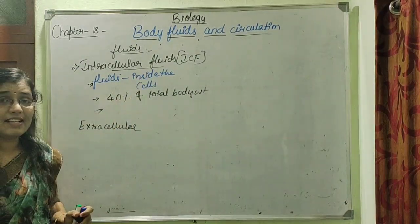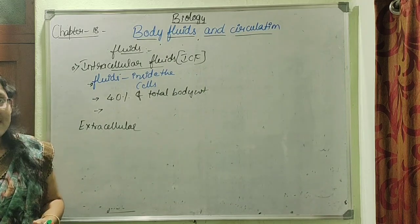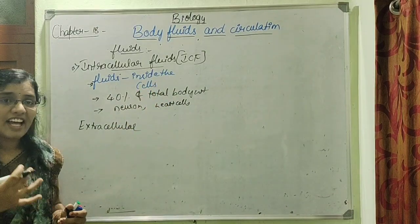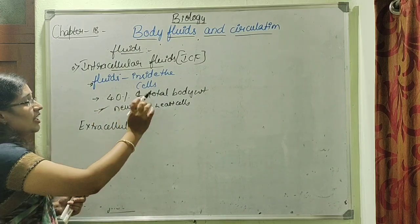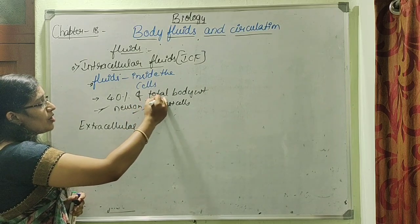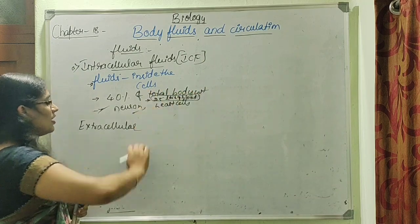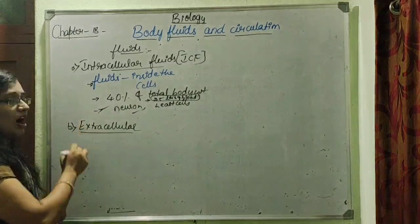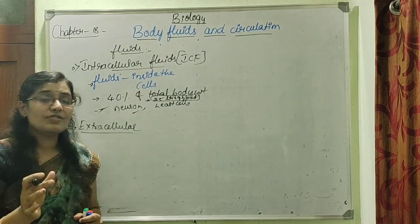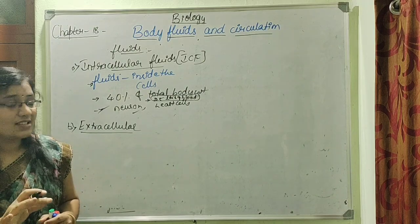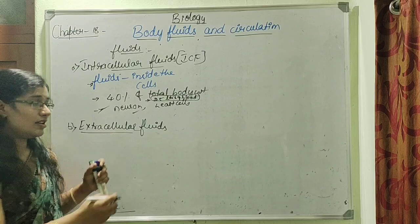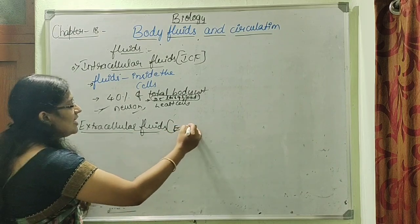The composition of intracellular fluids varies between cells based on the type of cells - it might be neurons or heart cells. So based on the type of cells, the composition within the fluid varies. Intracellular fluid actually comprises about 25 liters. Now let us move on to the fluids which are not present inside the cells but outside the cells - those fluids present outside or in between the cells are known as extracellular fluids, abbreviated as ECF.